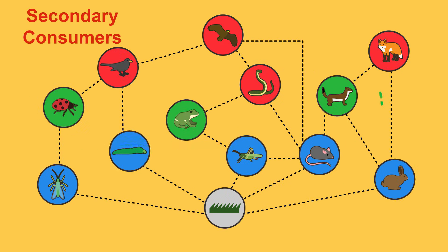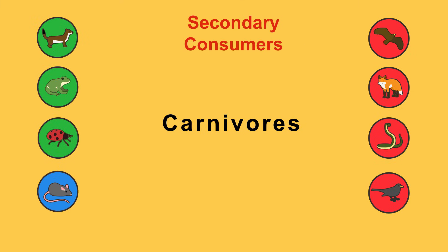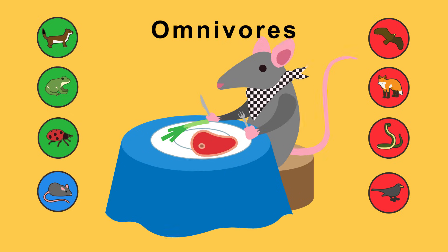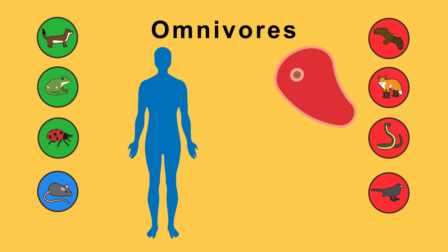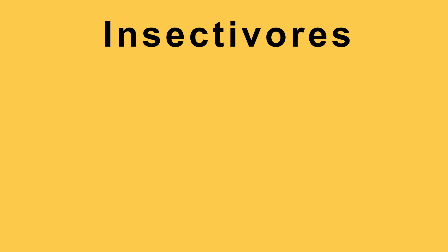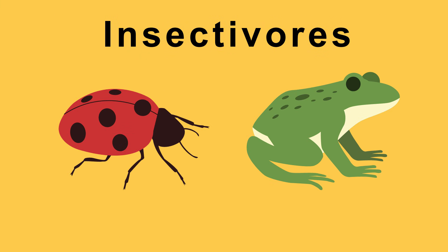Then there are secondary consumers. These are either carnivores so they only feed on other animals, or like the mouse they could be omnivores. They eat a variety of plants and animals. Most humans are omnivores. We eat meat but we also eat vegetables and grains. Or they can just be insectivores like the ladybird and frog which only feed on insects, worms and other invertebrates.